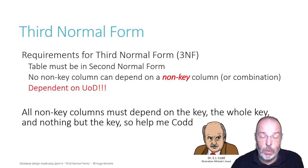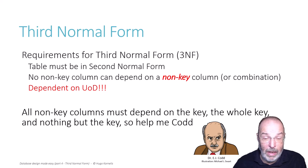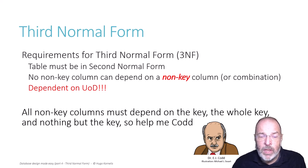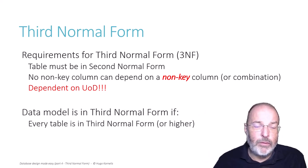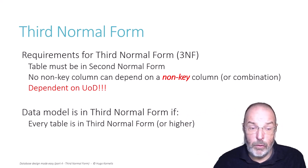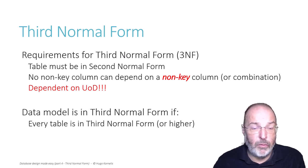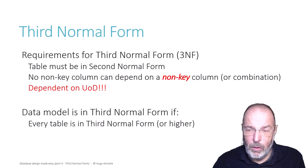Thanks to Michael J. Swart for the excellent illustration he made and allowed me to use. Just as with the previous normal forms, the third normal form requirement is defined at the table level. For your data model to be in third normal form, every table must be in at least third normal form. The data model is always in the lowest normal form of all the tables in that data model.